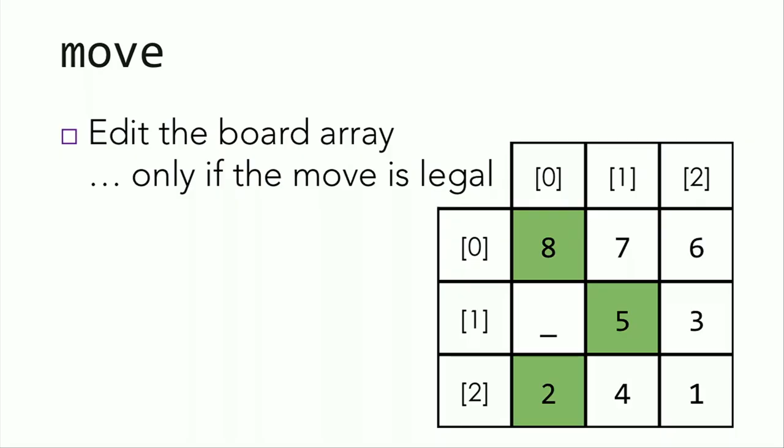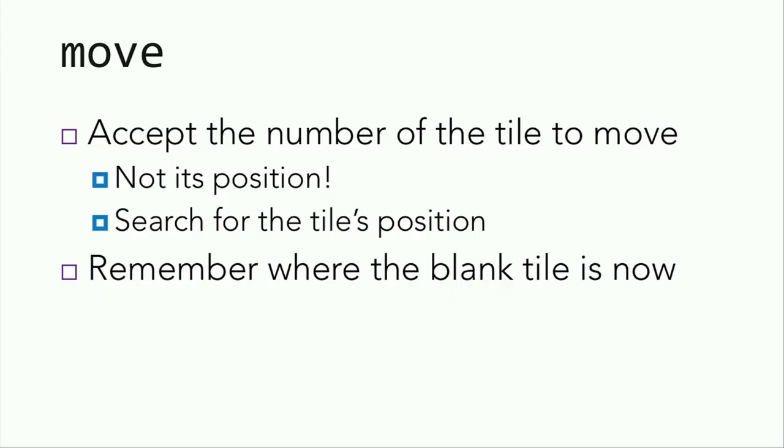Now you should only allow the user to make a move if it's legal. A legal move is any tile that is adjacent to the blank tile. That means above and below to the left and to the right. So you'll need to know where the blank tile is as well. Now for every move, you're searching for the user's tile. But it's probably not best to search for the blank tile every time because you're doing it every single time the user wants to move. So instead, it's best to remember where the blank tile is using some well-named variables.